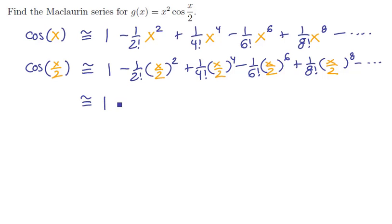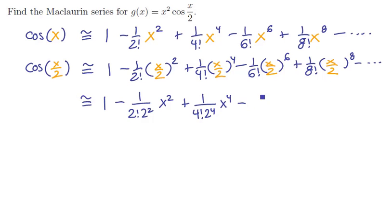We're going to have 1 minus 1 over 2 factorial times 2 squared times x squared, plus 1 over 4 factorial times 2 to the 4th times x to the 4th, minus 1 over 6 factorial times 2 to the 6th times x to the 6th, plus 1 over 8 factorial times 2 to the 8th times x to the 8th, minus the rest of the pattern.